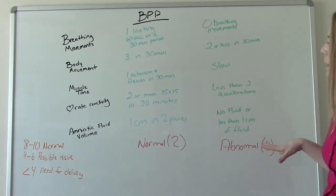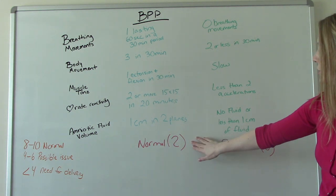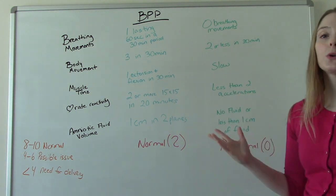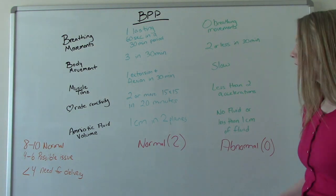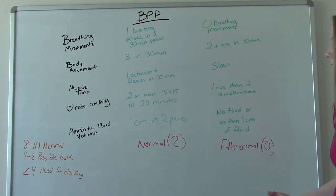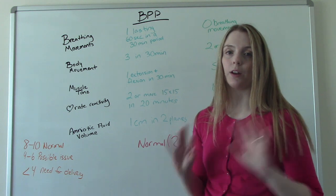And then if we add all these up, obviously there's five categories and normal is two each. So the best score you can get on a biophysical profile is a 10. Now, every baby gets a 10 even though it's normal and healthy. That's fine. Anything from 8 to 10 is considered normal and good and we're happy about it.